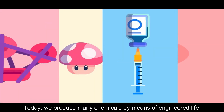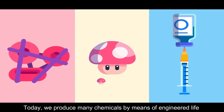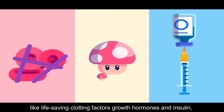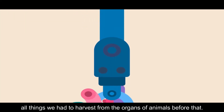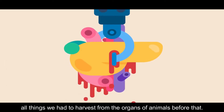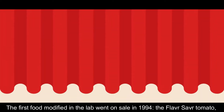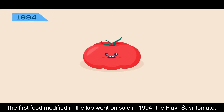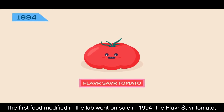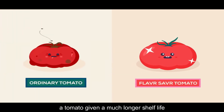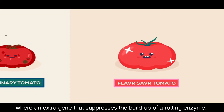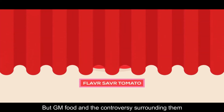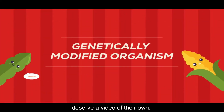Today we produce many chemicals by means of engineered life, like life-saving clotting factors, growth hormones, and insulin — all things we had to harvest from the organs of animals before. The first food modified in the lab went on sale in 1994: the Flavr Savr tomato, which was given a much longer shelf life through an extra gene that suppresses the production of rotting enzymes. GM food and the controversy surrounding it deserves a video of its own.